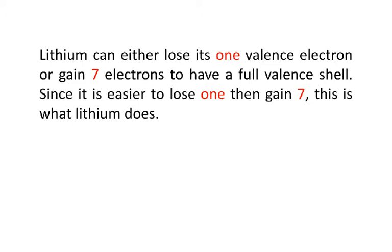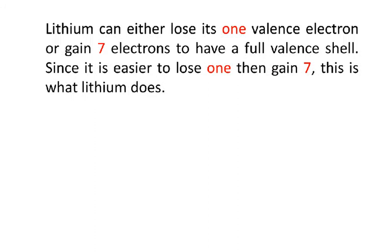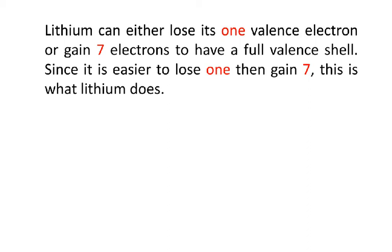Now, lithium wants to have eight. So somehow it either wants to have eight, or it can have two — because it can look like helium or it can look like neon. Neon has eight valence electrons. There are only two ways: if it loses its one valence electron, it'll end up looking like helium with two electrons. Or it can gain seven electrons, making it have eight valence electrons so it looks like neon. It's a lot easier just to get rid of one thing than to try and find seven others. So lithium is not going to gain seven electrons — it's going to lose one.